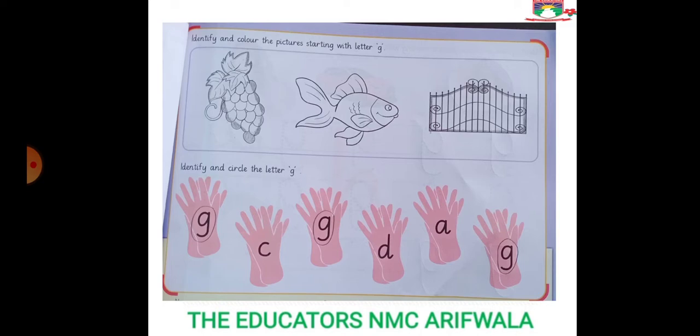What do we need to do with the letter G? We need to color the pictures starting with letter G. The G pictures are grapes and the gate. What do we need to do with the letters? Color them.